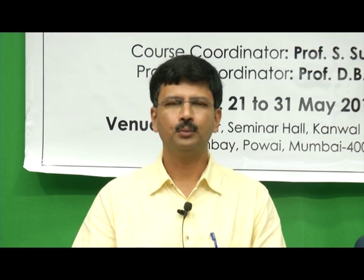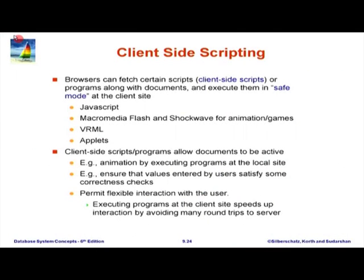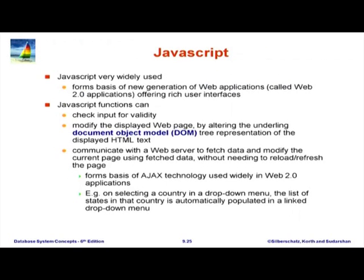Going back to the slide on client-side scripting — JavaScript is very widely used in Web 2.0. It is an interpreted language which runs on your browser. Initially it was used for simple things like user input validation. For example, if I expected a date in a certain format, or if the user needed to enter a city, I could take the first few characters and automatically show a list of candidate cities from which the user could select.